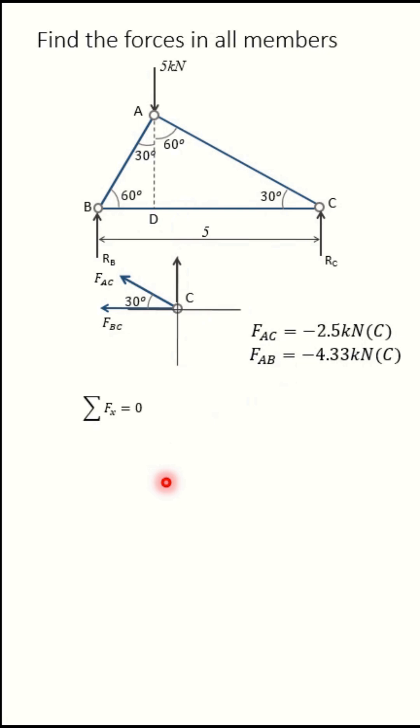Apply ΣFx = 0, so FBC + FAC·cos30 = 0. When you solve this, the value of FAC is known, -2.5. Put this value here and solve it. You will get FBC = 2.17 kilonewtons.